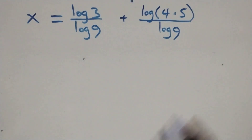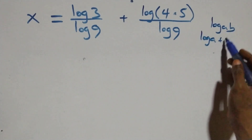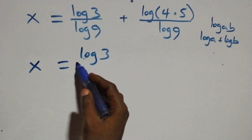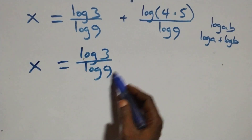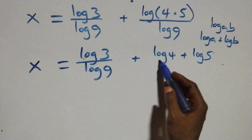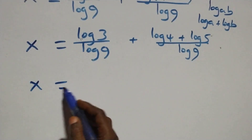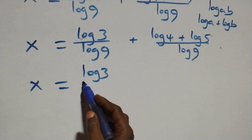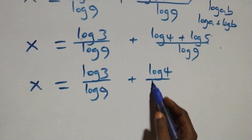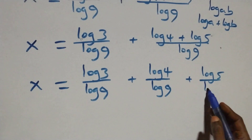The next step: this follows the logarithm product rule — when we have log(a times b), that is the same as log a plus log b. So we can write x equals log 3 over log 9 plus log 4 plus log 5, all over log 9. We can rewrite this as x equals log 3 over log 9 plus log 4 over log 9 plus log 5 over log 9.